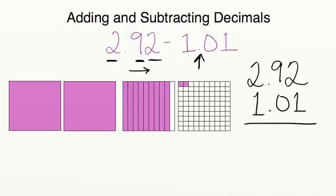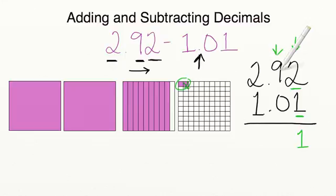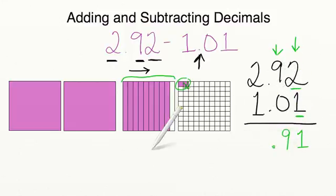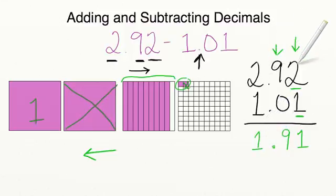Let's go ahead and start subtracting. Just like a regular subtraction problem, we're going to start all the way to the right — in the hundredths place. We have 2 hundredths and we're going to subtract 1. 2 minus 1 equals 1. Moving to the tenths place, we have 9 tenths and we subtract 0, which leaves us with 9 tenths. Now we bring down our decimal point, which represents that we are moving into whole numbers. We have 2 wholes and we subtract 1, which leaves 1 whole. So 2 and 92 hundredths minus 1 and 1 hundredth equals 1 and 91 hundredths.